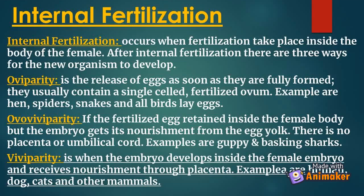There are two types of fertilization. The first one is internal fertilization, which occurs when fertilization takes place inside the body of the female. After internal fertilization there are three ways for the new organism to develop. Oviparity is the release of eggs as soon as they are fully formed; they usually contain a single fertilized ovum. Examples are hens, spiders, snakes, and all birds that lay eggs.